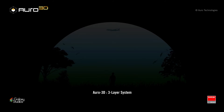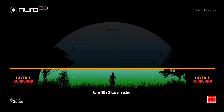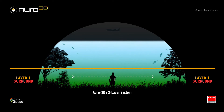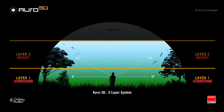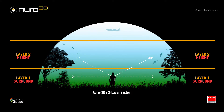Spatial sound can be divided into three different layers: sounds coming from the horizontal plane around us; above this is a second layer that reveals both direct sounds and height reflections — these reflections are important for our brains to better understand the sounds originating in the first layer; and the third layer, revealing sounds that come from directly above us.